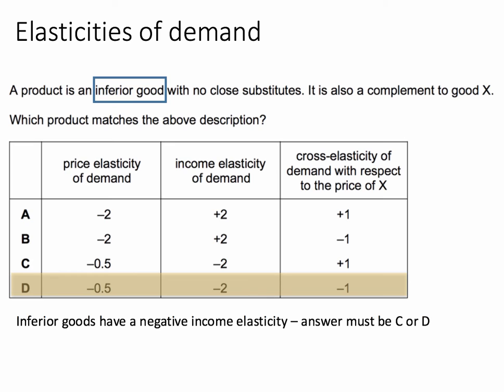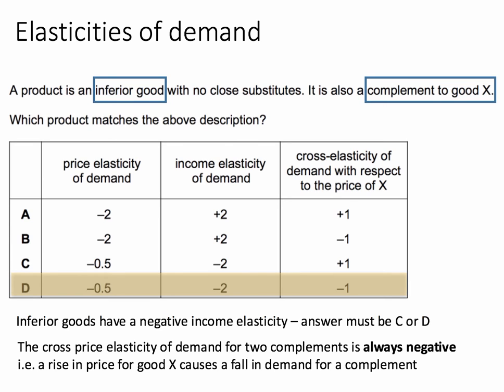We're also told that this product is a complement to Good X — a complement as opposed to a substitute. A cross-price elasticity of demand for two complements is always negative. If the price of Good X goes up, for example, that would cause people to buy less of Good X and also less of the complementary good. So we're looking for an option which gives us a negative income elasticity of demand and a negative cross-price elasticity of demand with respect to the price of X.